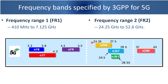Let us look at the frequency bands specified by 3GPP for 5G. 3GPP in its Release 15 and 16 specifications has specified supported bands for 5G. It has specified two frequency ranges: Frequency Range 1 (FR1) and Frequency Range 2 (FR2). FR1 frequency bands are low and mid-band, ranging from 410 MHz to 7.125 GHz. Existing 2G, 3G, and 4G systems are already working in these bands, so operators have to reframe these frequency bands for 5G deployments. In FR1, three new bands are identified by 3GPP: N78, N77, and N79.